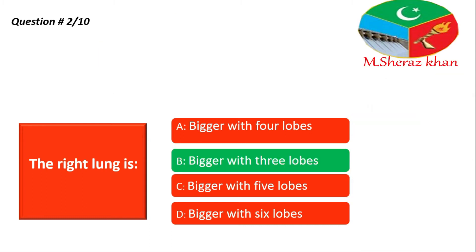So the right answer is option B. Yes, exactly — yani ki aapke paas jo right lung hai, comparatively with the left lung, it is bigger and it consists of three lobes.